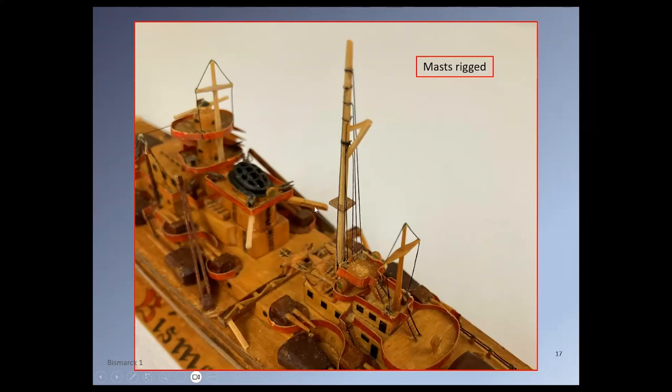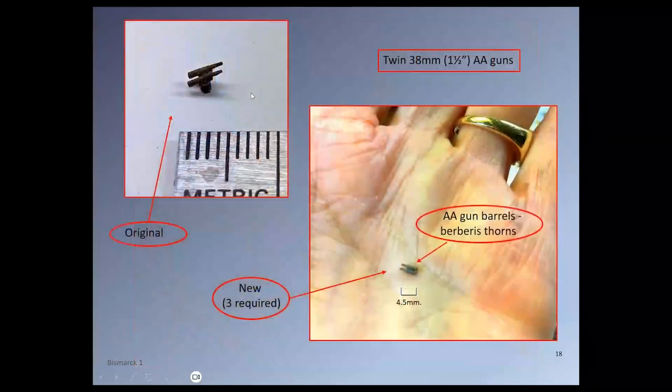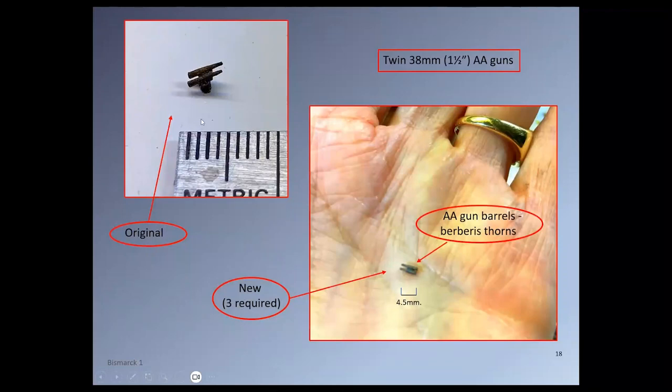The twin machine gun units, of which you can see that one there, are quite tiny. To make them, here's one of the original ones. I found thorns from a berberis bush in my garden were at the right scale to make the barrels. And this is one of the replacements. It's four and a half millimeters long, and I needed three of those to replace the missing ones.